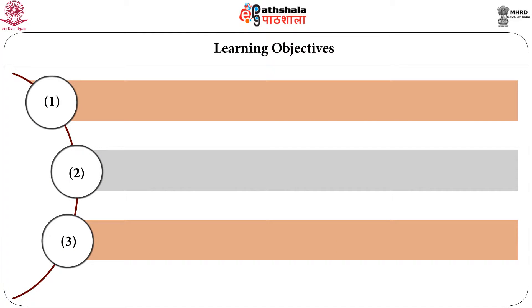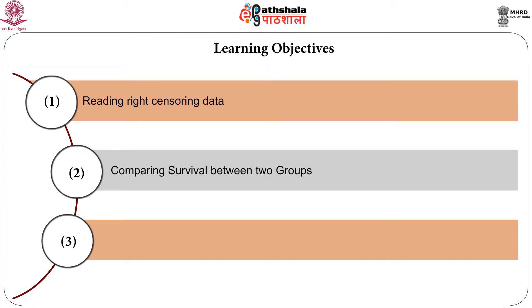In this module, the learning objectives are: reading right-censored data, comparing survival between two groups, the Greenwood formula, and the SMR. In this module we are going to illustrate the actual estimator; the software R will be used to illustrate the actual estimation procedure.